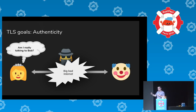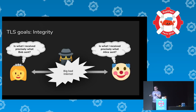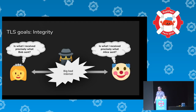TLS also optionally allows Bob to authenticate Alice — not commonly used on the web but used in enterprise settings. Integrity is also a goal: not just bits and bytes, but integrity of the whole communication, including replay protection. For example, if you send 'deposit a thousand euros,' someone shouldn't be able to replay that message to the server a second time.